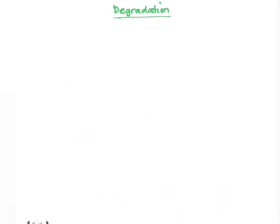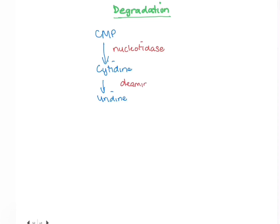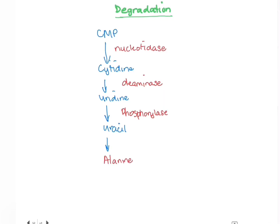The final step is the degradation of pyrimidines. CMP is converted to cytidine by a nucleotidase enzyme. Cytidine is then converted to uridine by deamination. Uridine is then converted to uracil, which requires a phosphorylase enzyme. Uracil then forms beta-alanine along with ammonia and carbon dioxide. Beta-alanine can then make acetyl-CoA, which is important for the citric acid cycle.